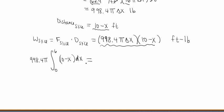All right, so this is a fairly straightforward integral to do. So we have our 998.4π out front. Then we end up doing the Fundamental Theorem of Calculus, and we get an antiderivative of 10x minus ½x². And then we're gonna evaluate that from 0 to 6.